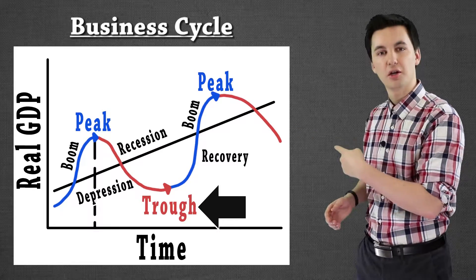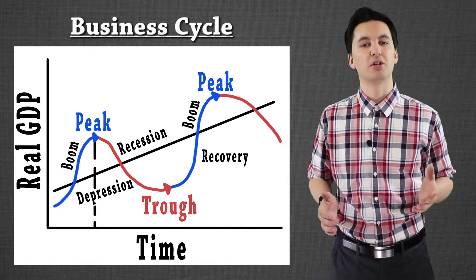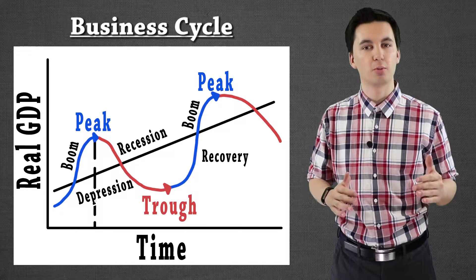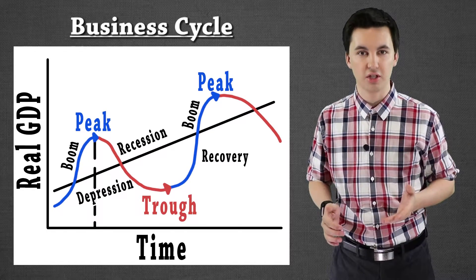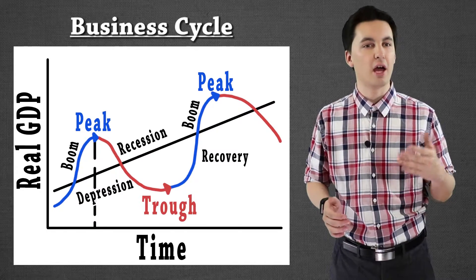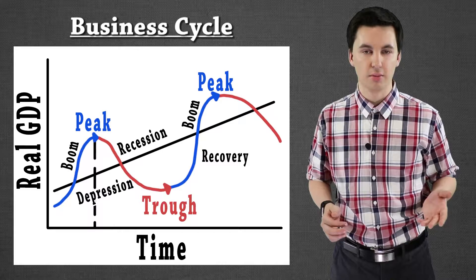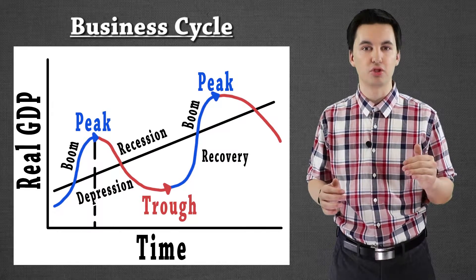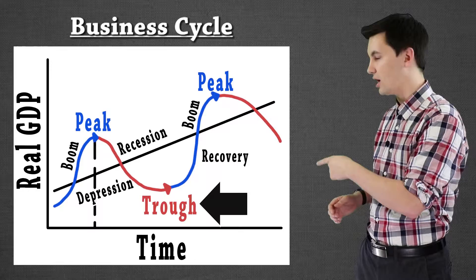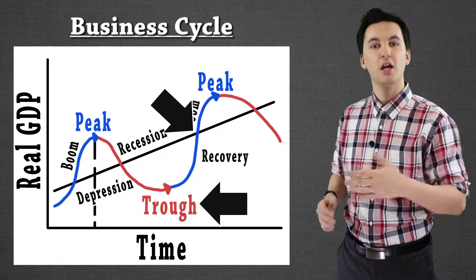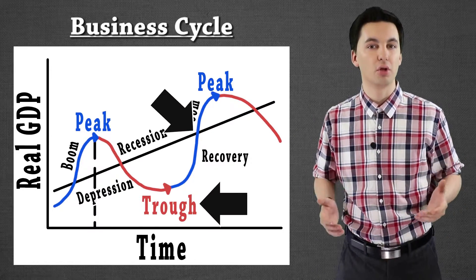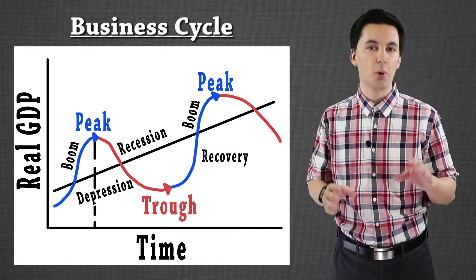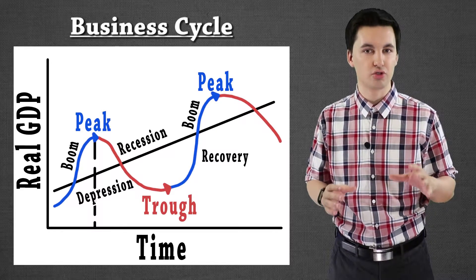You can see the trough on the chart right here. The trough is important because this is where we're going to stop declining, and then the cycle continues with another expansion period. It's important to understand that the gap between the trough and the trend line is where we'll have more unemployment — that's going to be a recessionary gap. So it's important to understand what's happening on the chart.